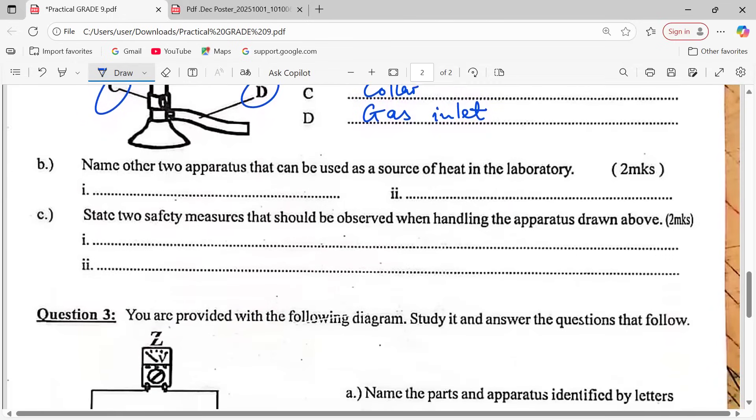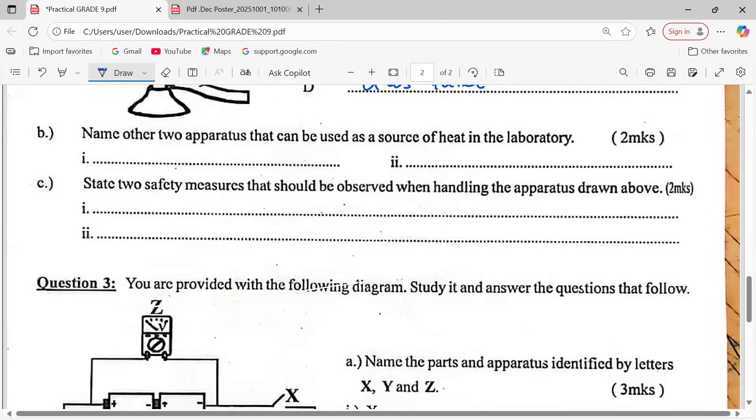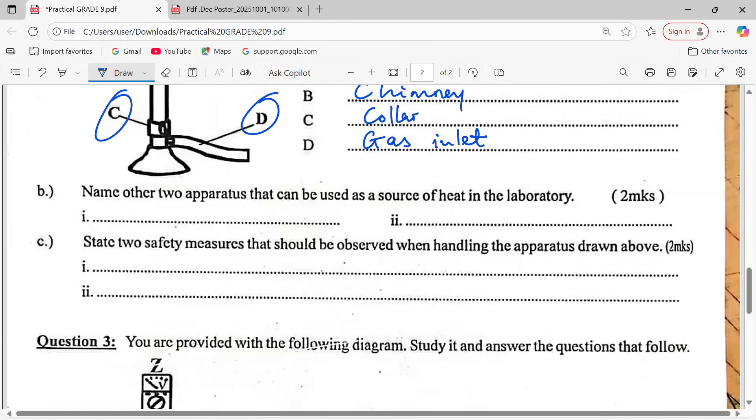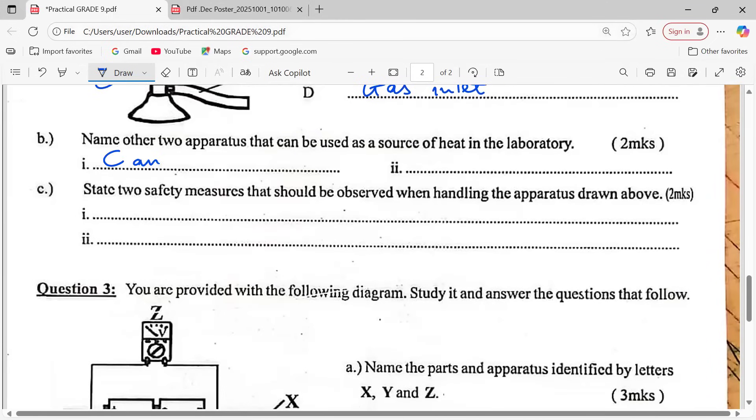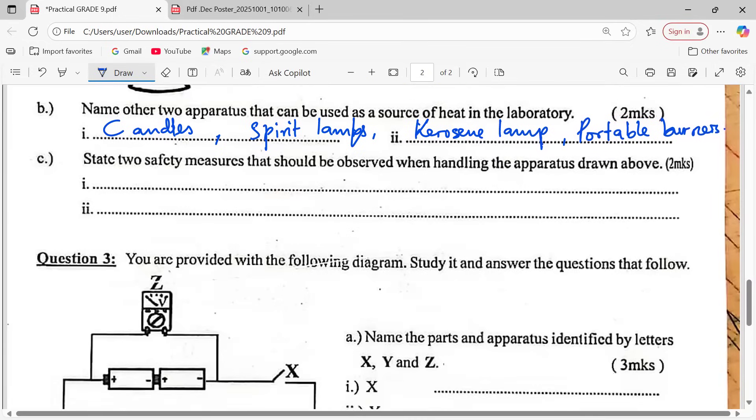Look at part B of the same. Name other two apparatus that can be used as a source of heat in the laboratory. Apart from Bunsen burner we can use candles, we can use the spirit lamps, we can use kerosene lamp, we can also use portable burner, etc. There are many but those are just a few.